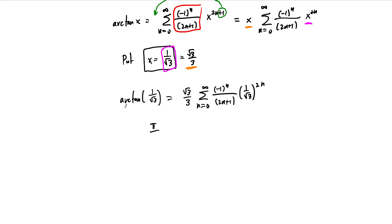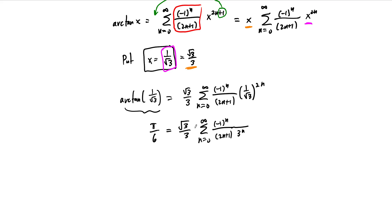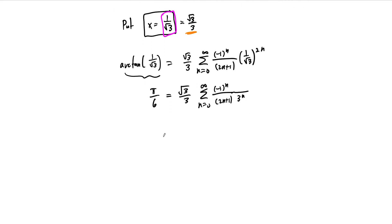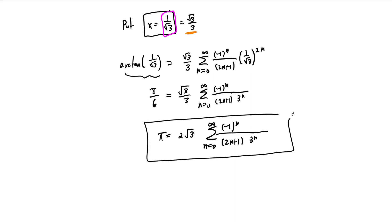The last step is to multiply through by 6, and we end up with this very beautiful power series representation of pi as the sum of this series involving the arctangent function.